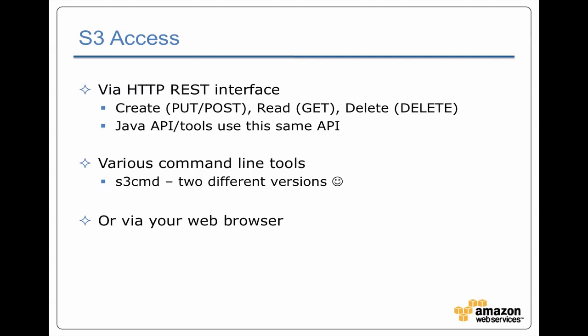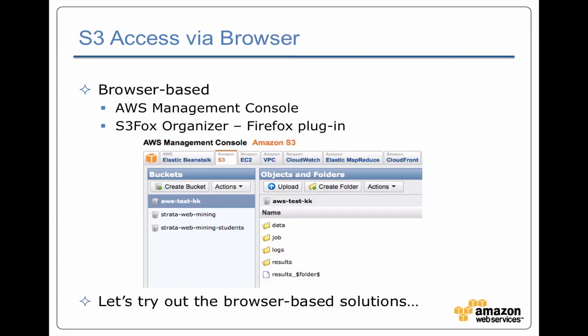There are actually two versions of S3 command — one in Python, one in Ruby — both with the same name. A more common way to interact with S3, at least when you're getting started, is with your web browser. There are two common ways to do this: one is via the AWS Management Console standard browser interface, and the other is a Firefox plugin called S3 Fox Organizer. Both have their strengths and weaknesses, so I often use both when working with S3.